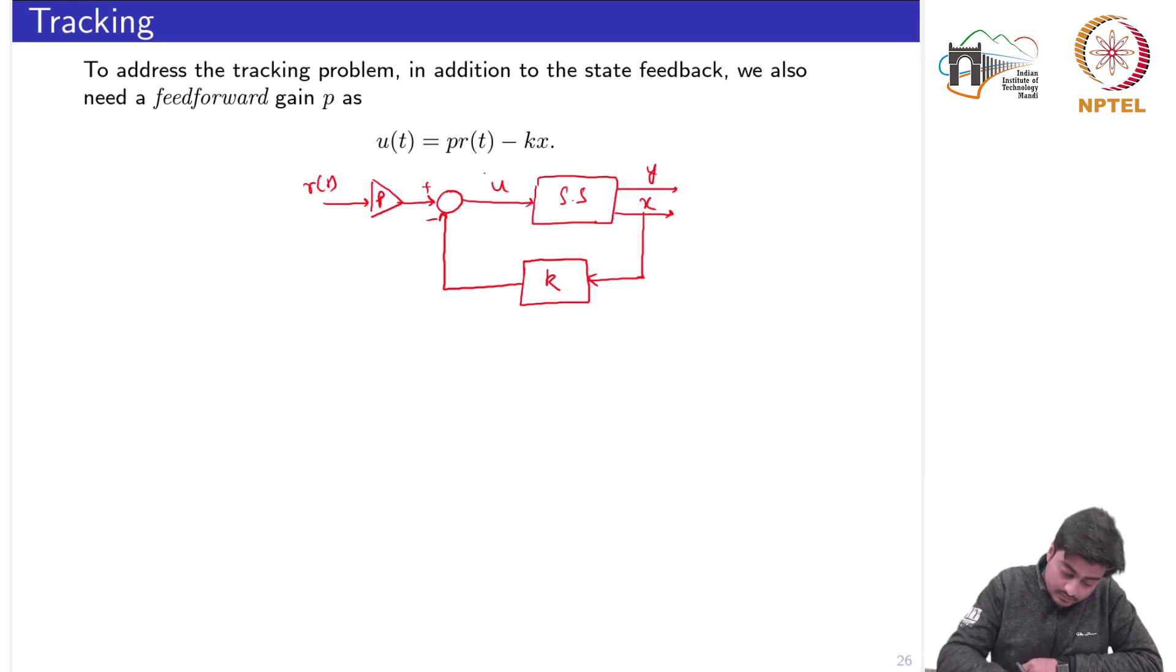This is the control structure. This complete part we will call the controller and this is nothing but this equation u(t) is equal to p r minus k x.